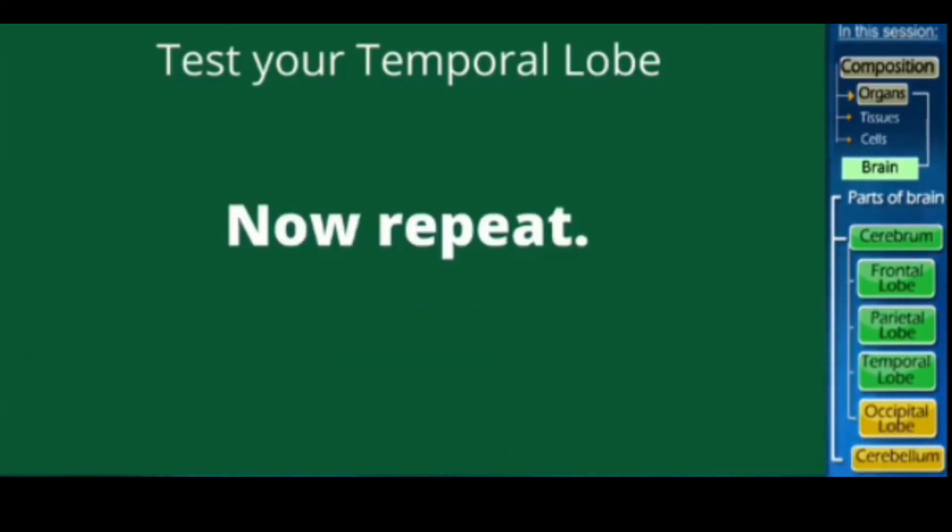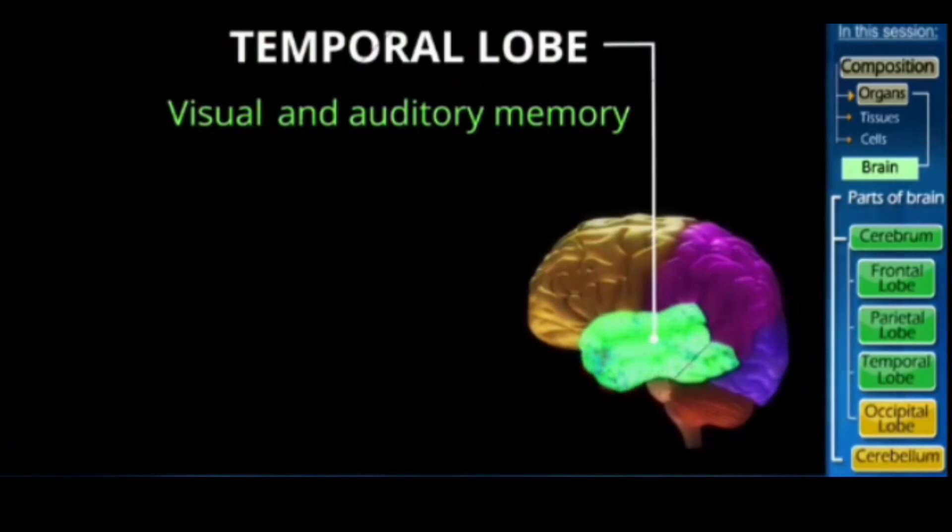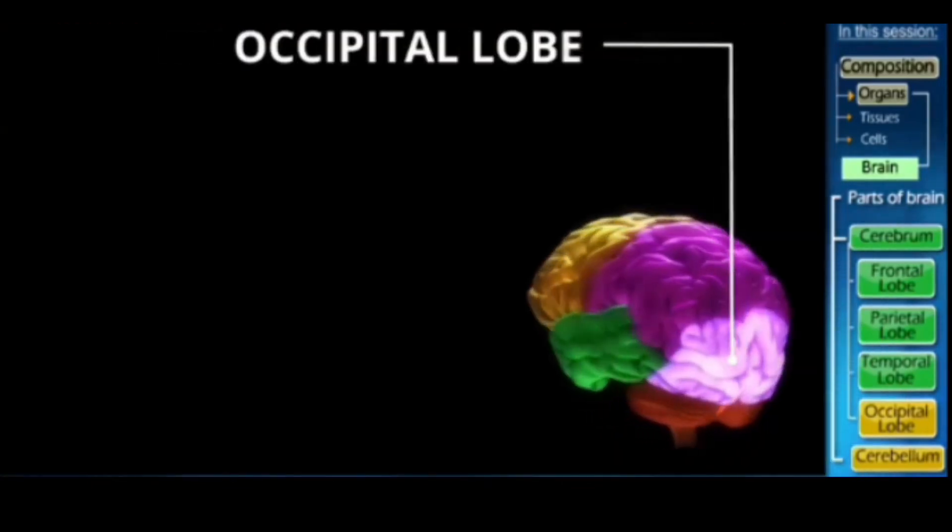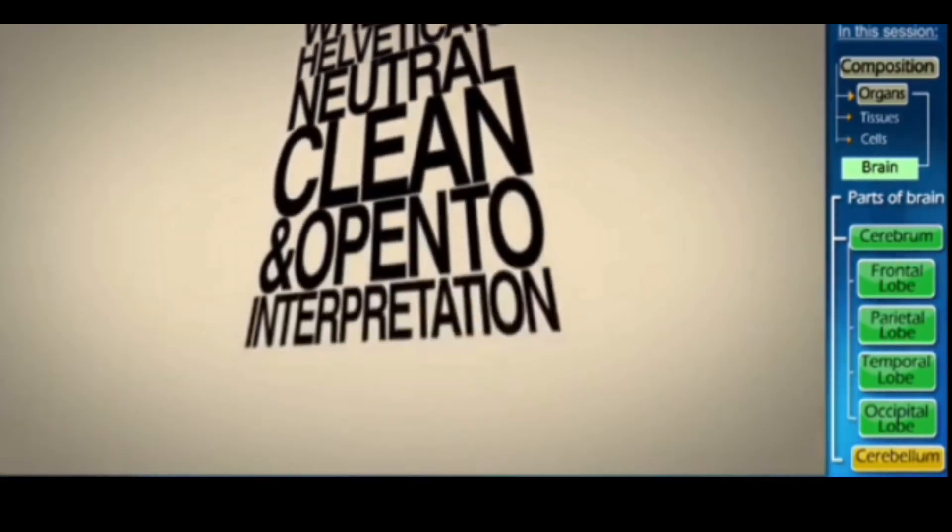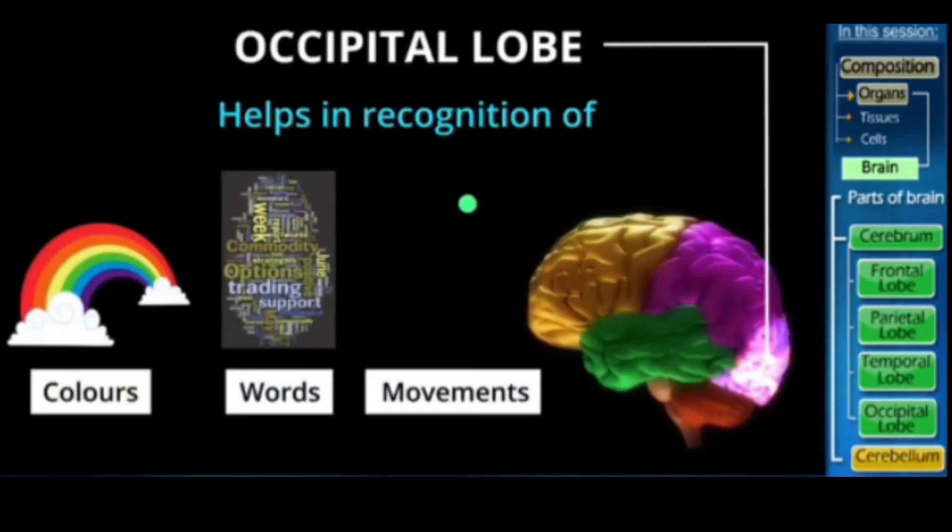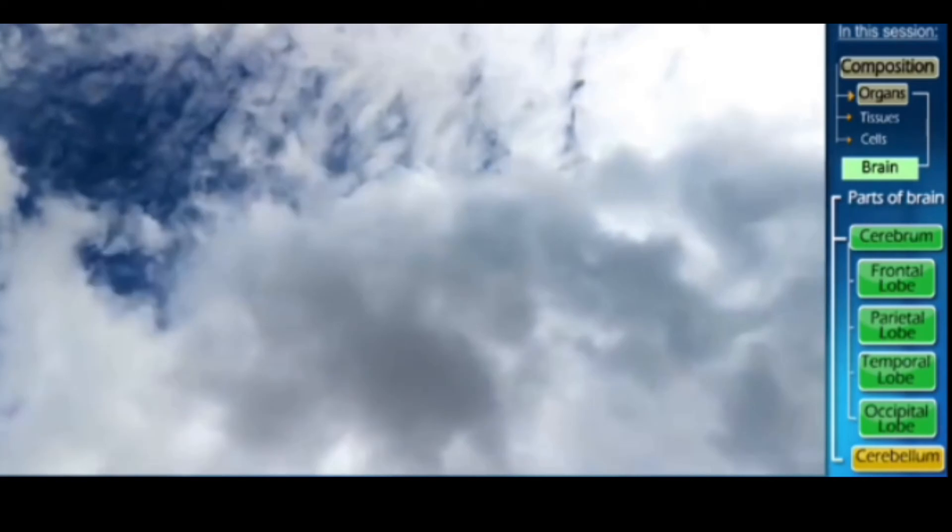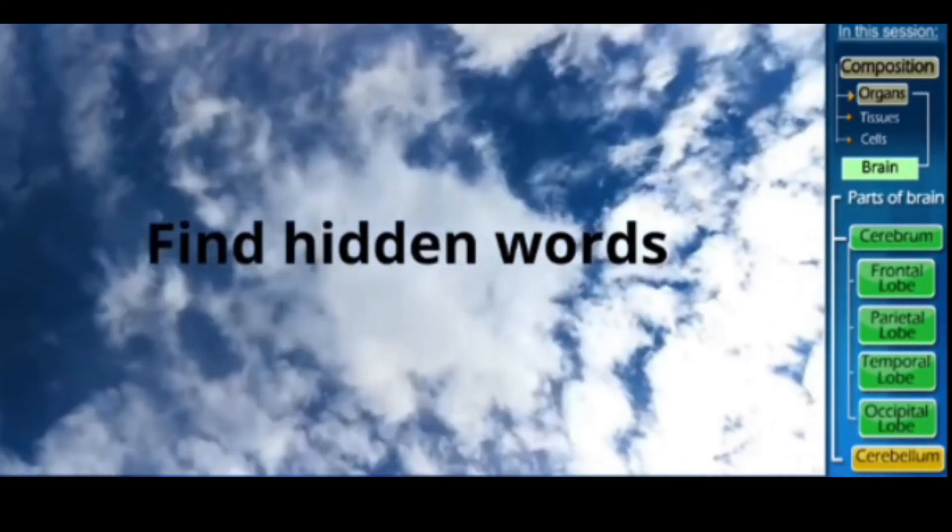Let's move ahead to the fourth and the last lobe, the occipital lobe. It helps in recognition of colors, words and movements. So let's take a small test for this. In this moving video you have to find the 10 hidden words and you have 10 seconds. Let's start. Wow, so quickly we have completed learning about the cerebral lobes along with their functions.